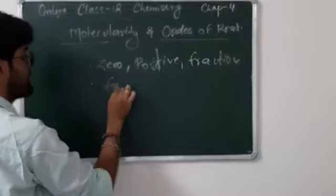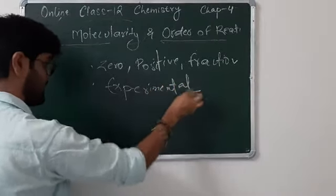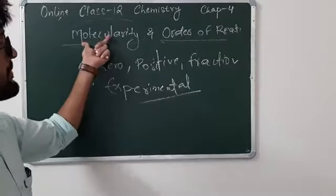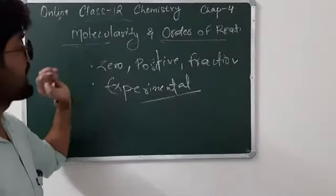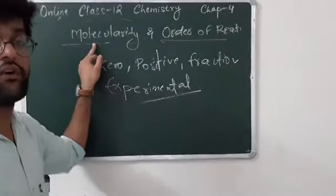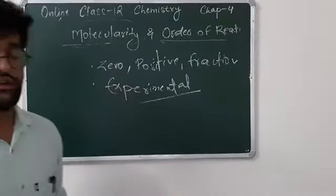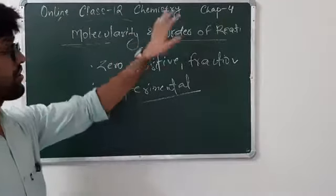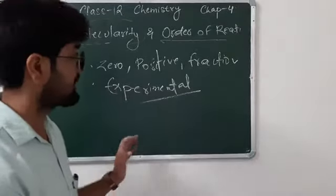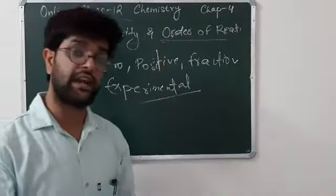Order of reaction is experimental - we directly predict it through experiment. Sometimes you are asked to write the difference between molecularity and order of reaction. The molecularity of a reaction is just a theoretical value, which we assume by observing the chemical reaction. Its value can be 0 or positive, but cannot be a fraction. Whereas order of reaction is an experimental quantity, which we calculate on the basis of experiment, and the order of reaction can be 0, positive, or a fraction.